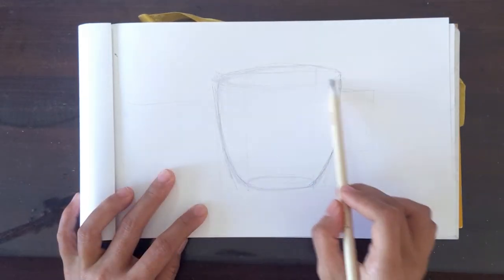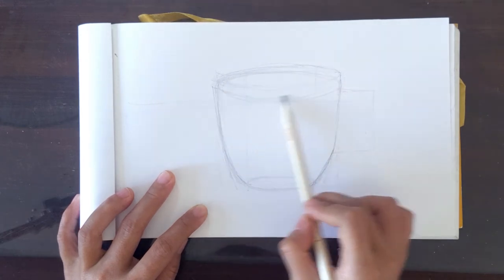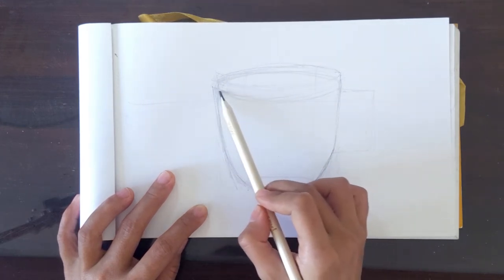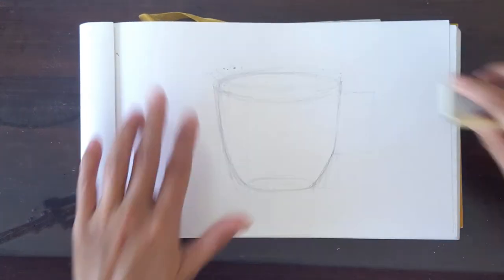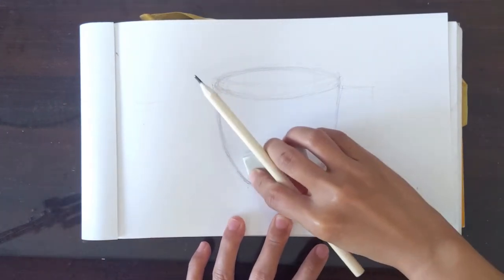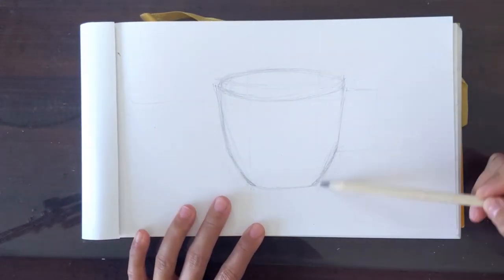We will now draw the mouth of the cup by making a big oblong on top. After doing this, we can now make the necessary adjustments to achieve the shape of the cup.